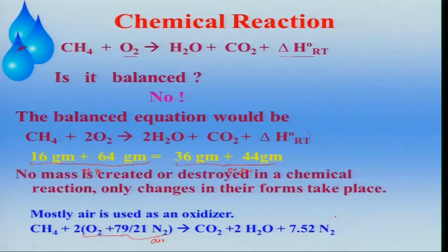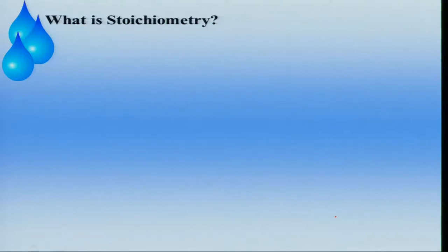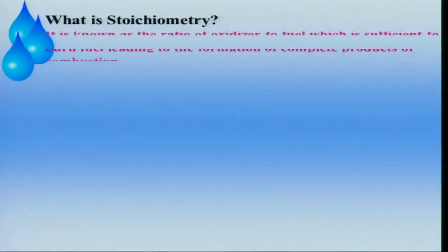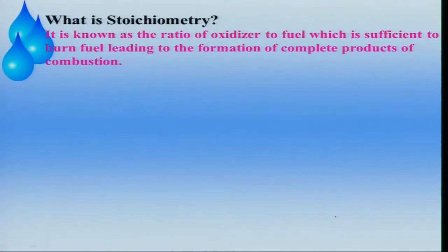A balanced equation does not mean the number of moles on the left-hand side equals those on the right — you should keep that in mind. Now the question arises: what is stoichiometry? It is related to the balanced equation. The meaning is the ratio of oxidizer to fuel which is sufficient to burn a certain amount of fuel, leading to the complete formation of combustion products.